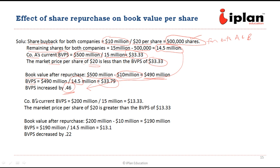Let us observe the same for Company B. The current book value is $200,000,000 divided by 15,000,000 outstanding shares. The book value per share is $13.33. In this case, the market price of $20 is higher than the book value of $13.33, so the company is overvalued.